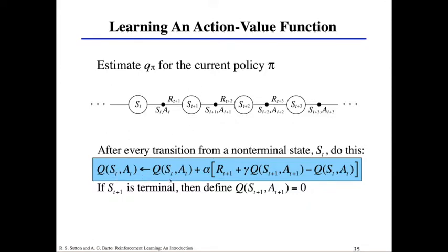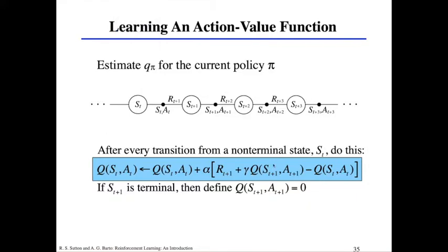Once you have the action-value function Q, it's really easy to read off the best action. You're in a particular state, and all you have to do to figure out which action to take is look at each of the individual actions for that state in this table and pick the highest one.